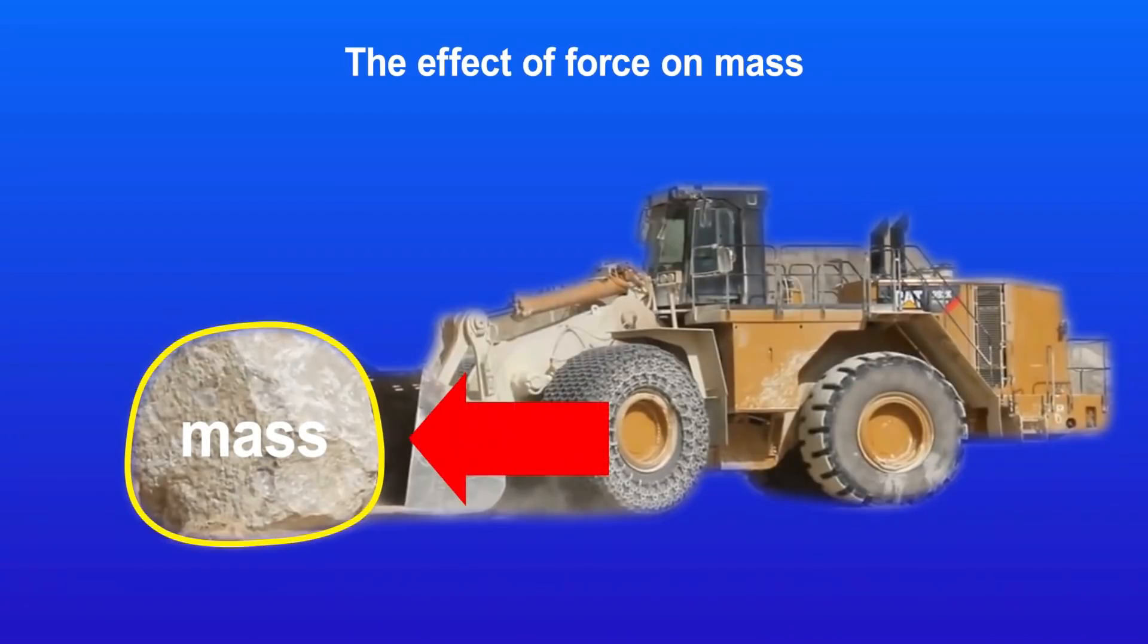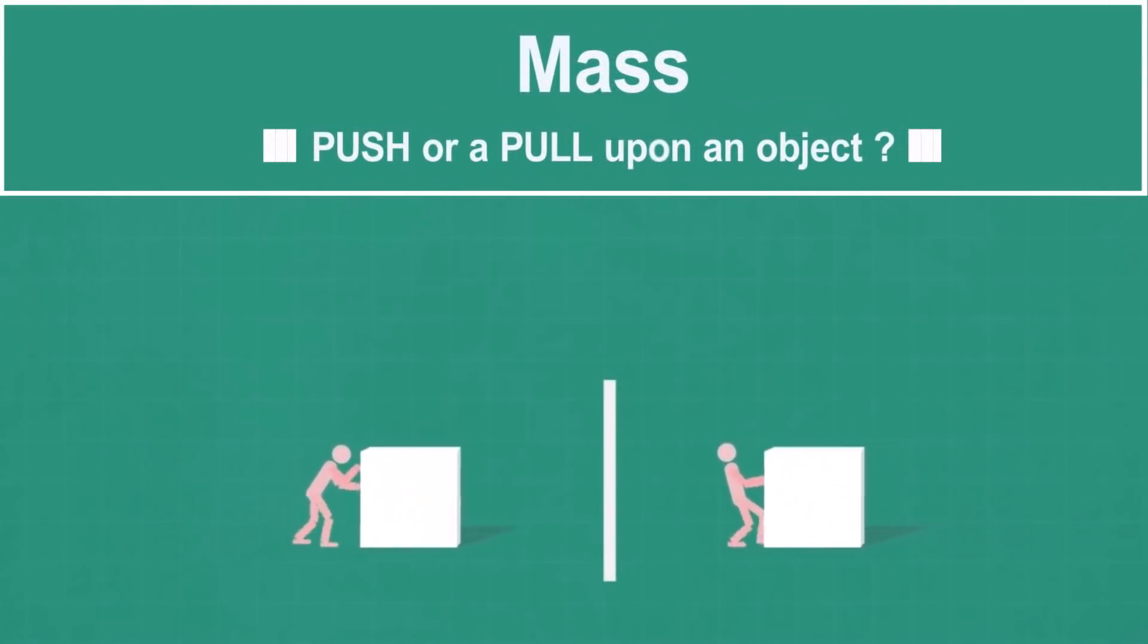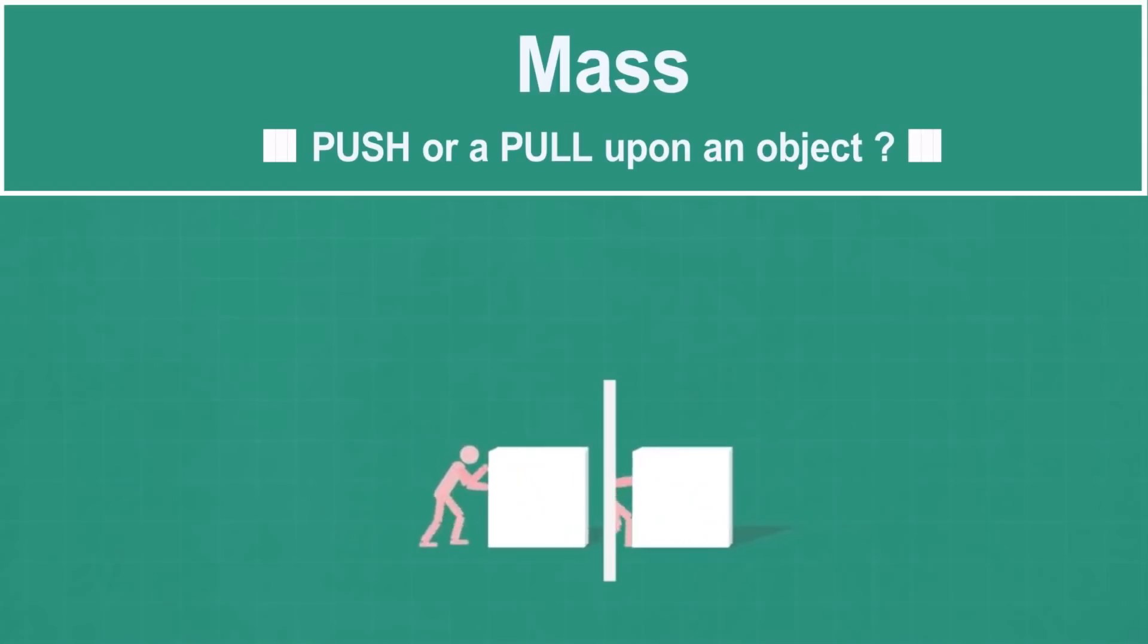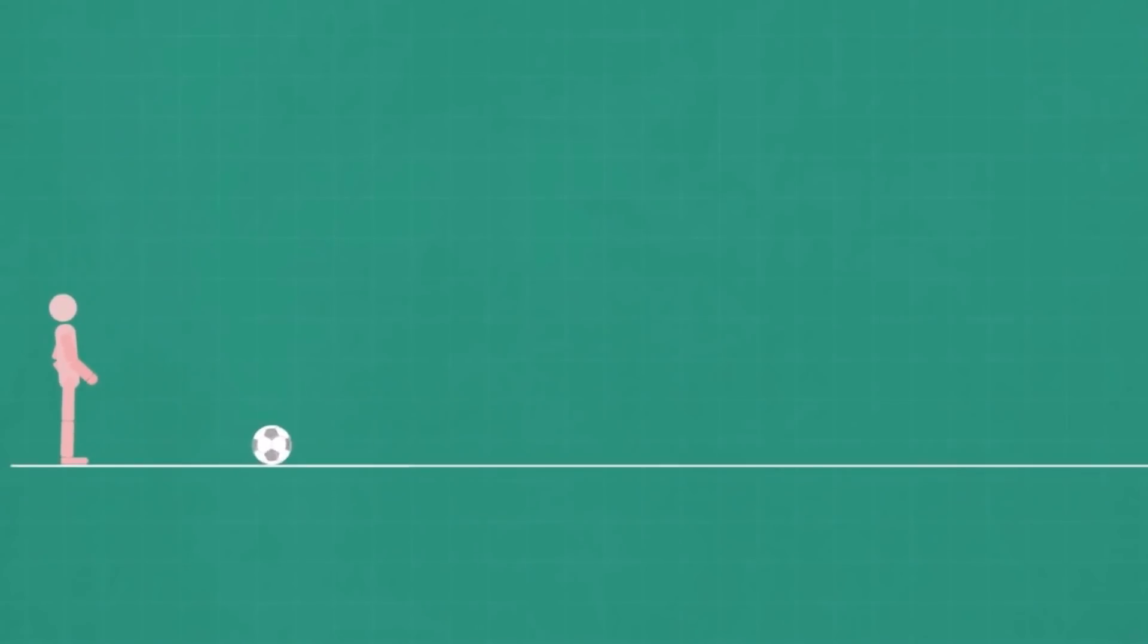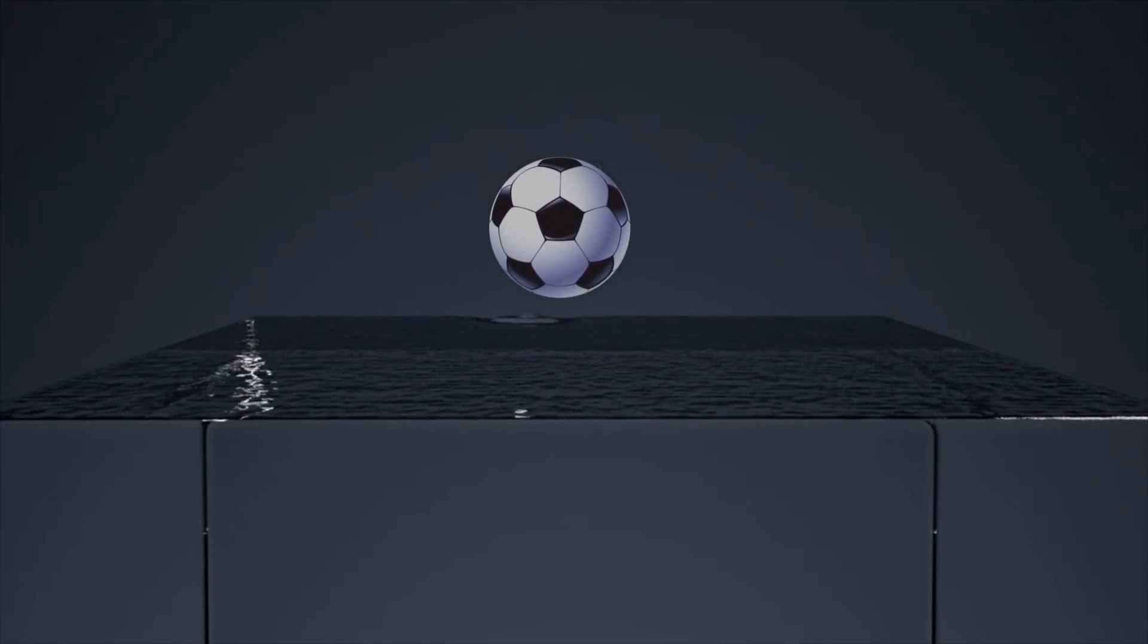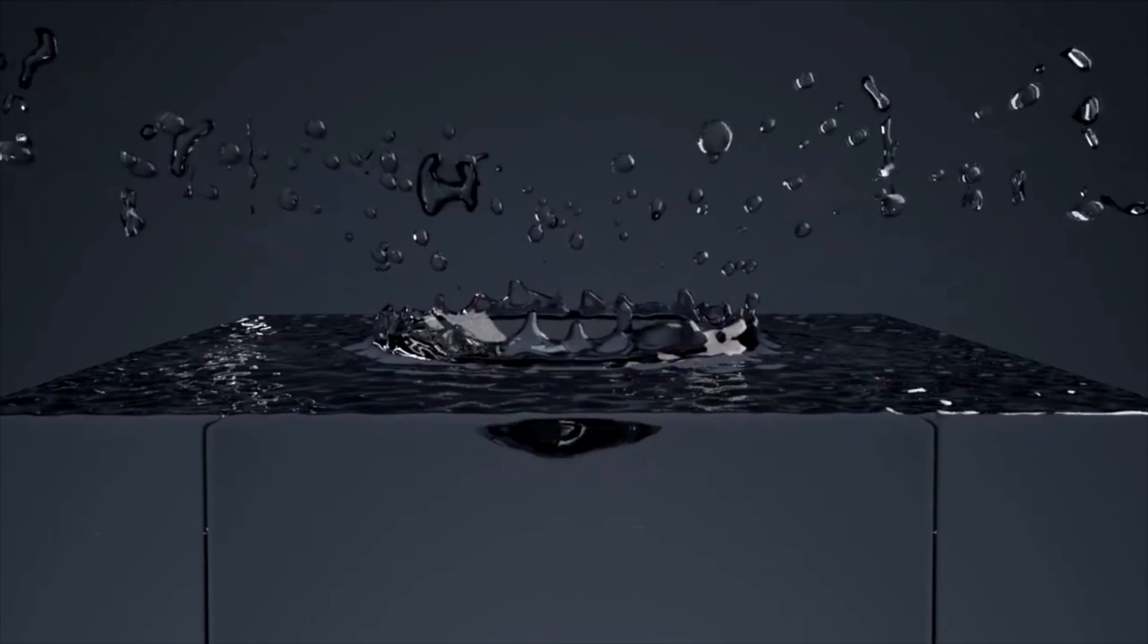The mass by definition is a measure of resistance of an object to acceleration when a force is applied. And in principle, the mass occupies space, and it is there where the force takes effect.